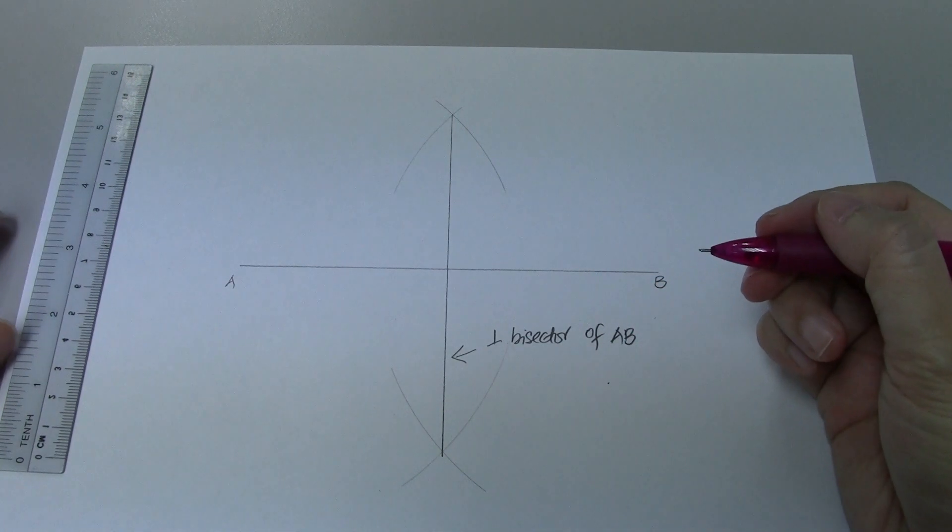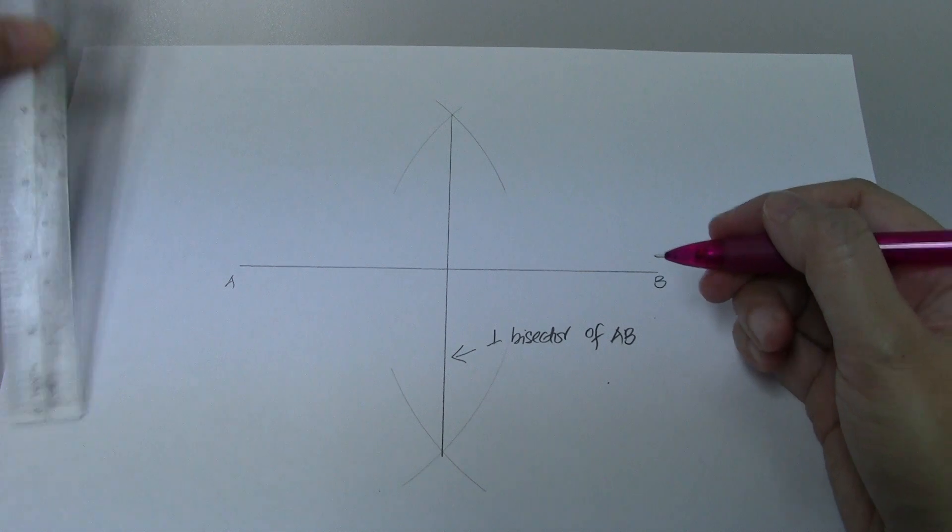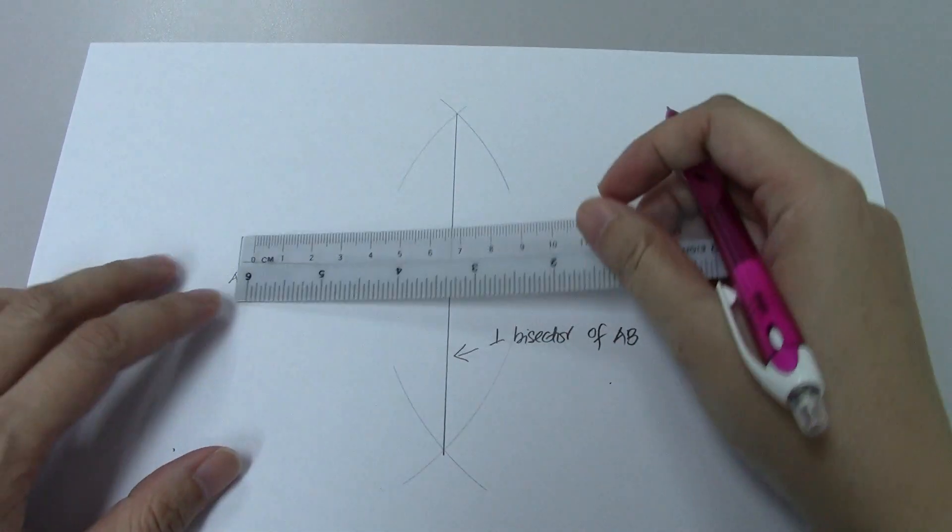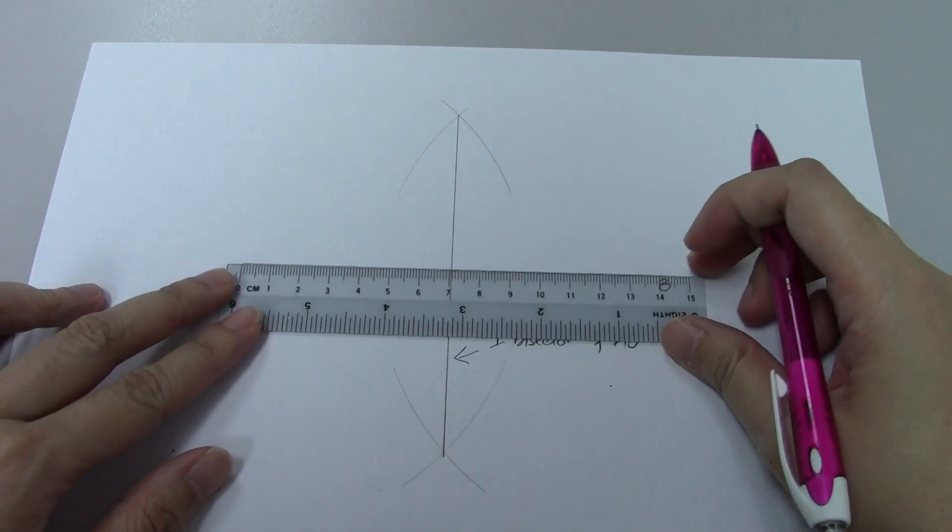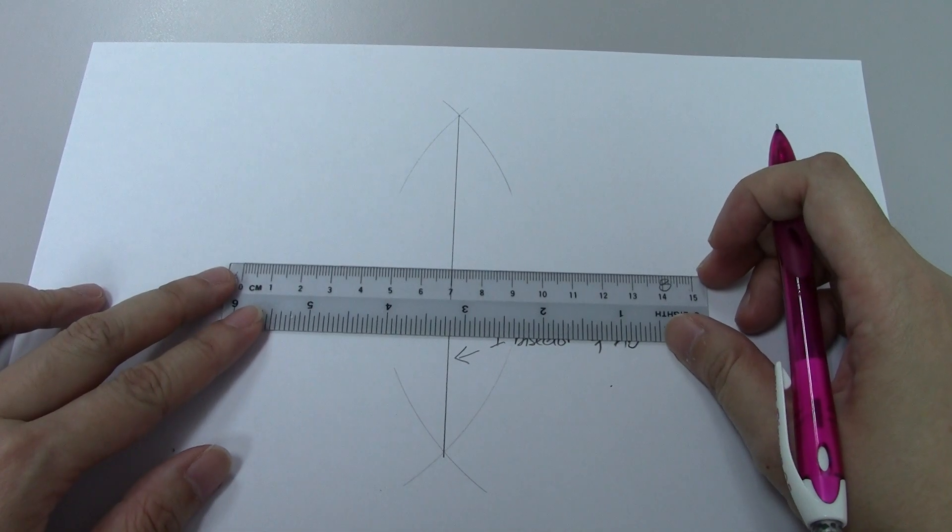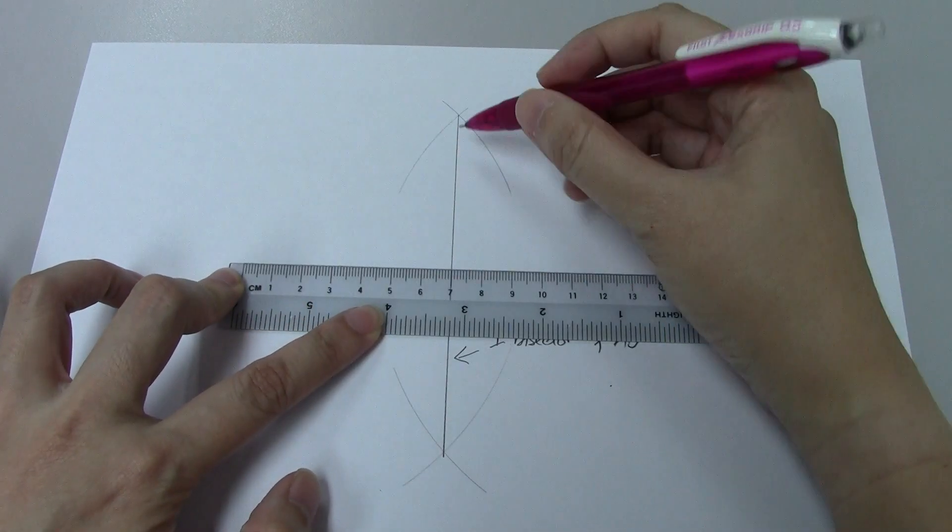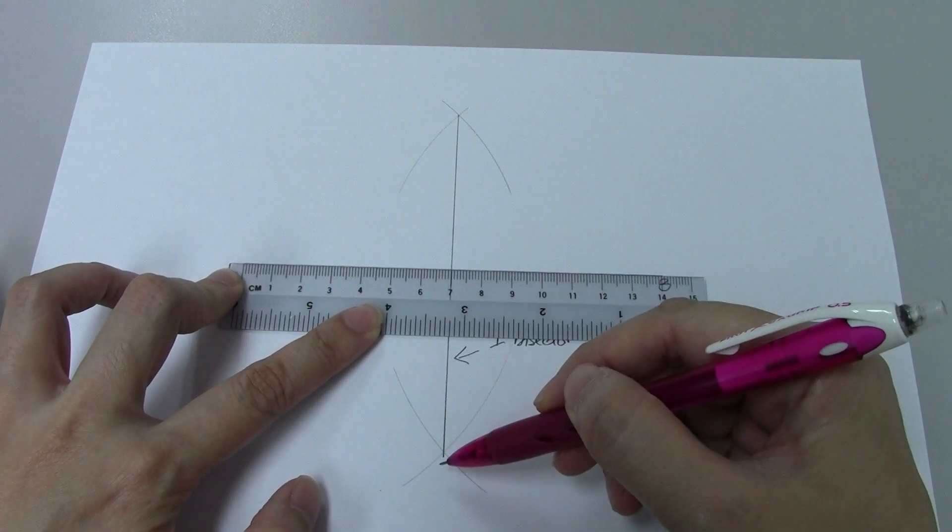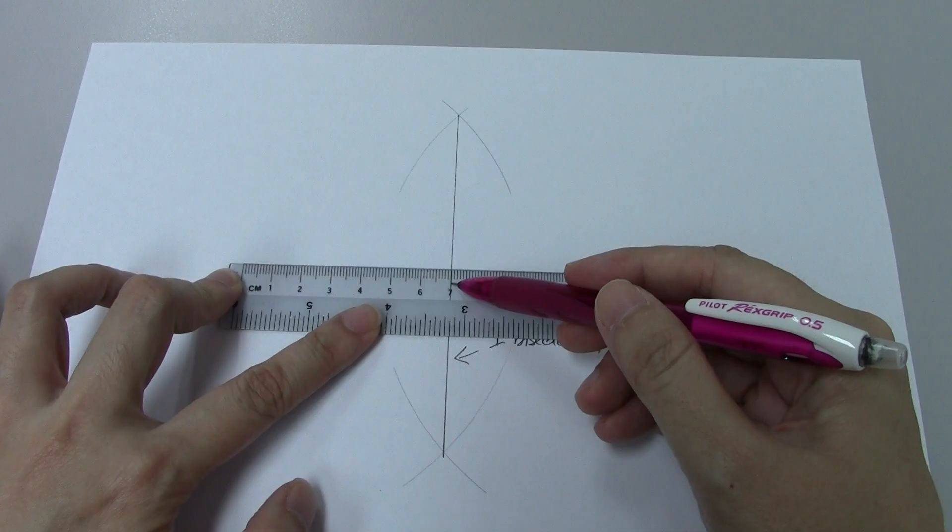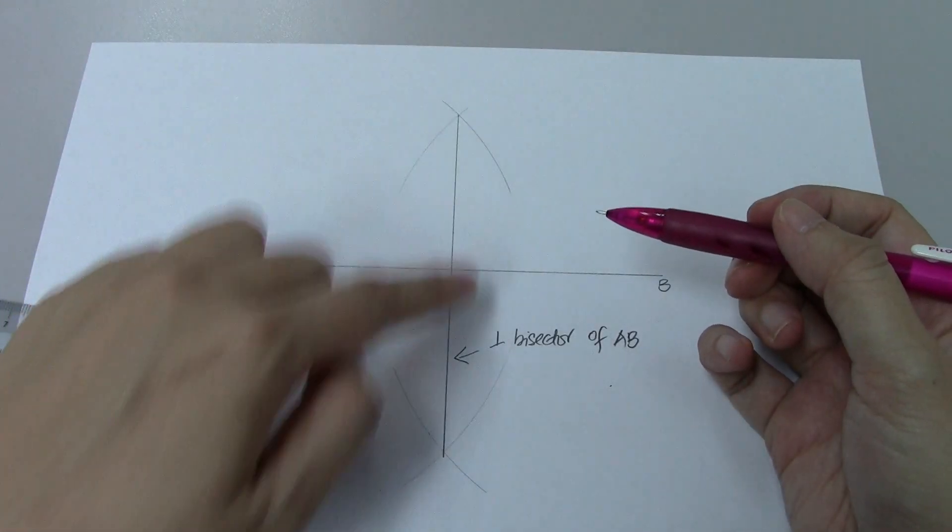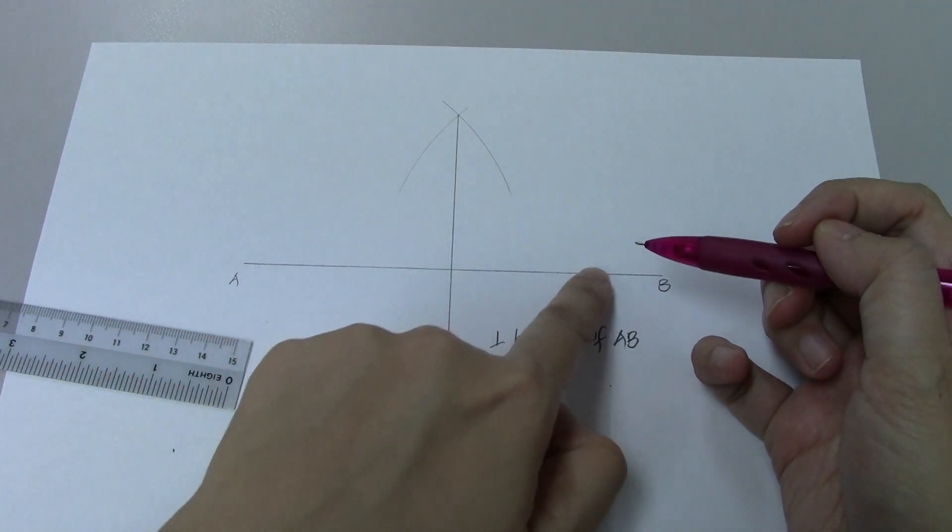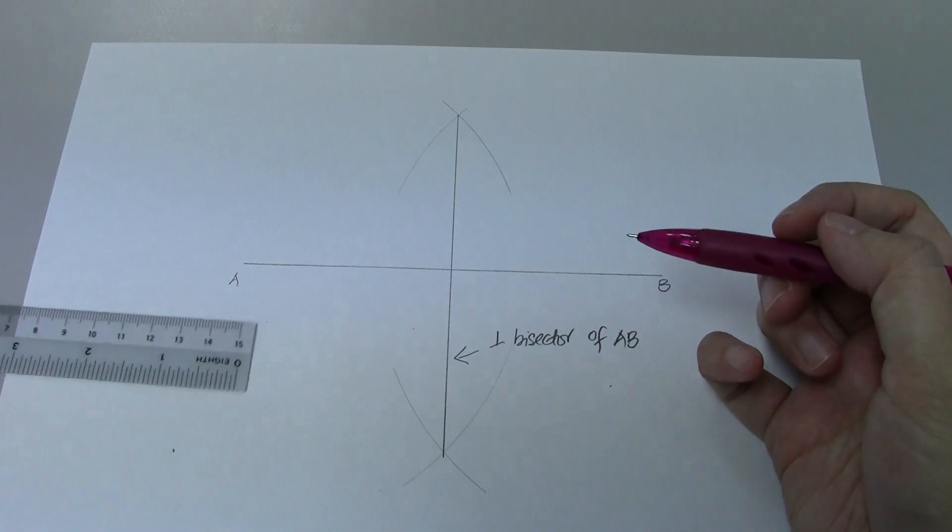How do I know I have done it accurately, correctly? What you can do is go ahead and measure your line A, B. So my line is 14 cm. So I can see that my perpendicular bisector cuts at 7 cm. So it cuts line A, B exactly into two equal parts.